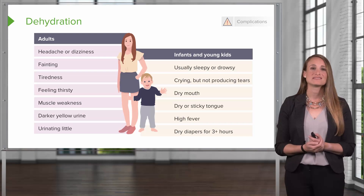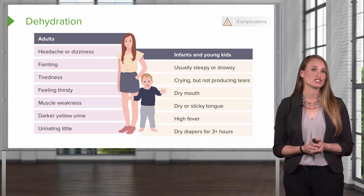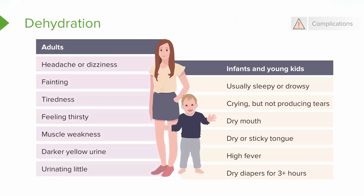So what are signs and symptoms of dehydration? In adults, they can experience headache or dizziness. They may feel faint and tired, and they may feel thirsty. Their muscles may feel weak, they may have dark yellow urine, and they may have a decreased urinary output.